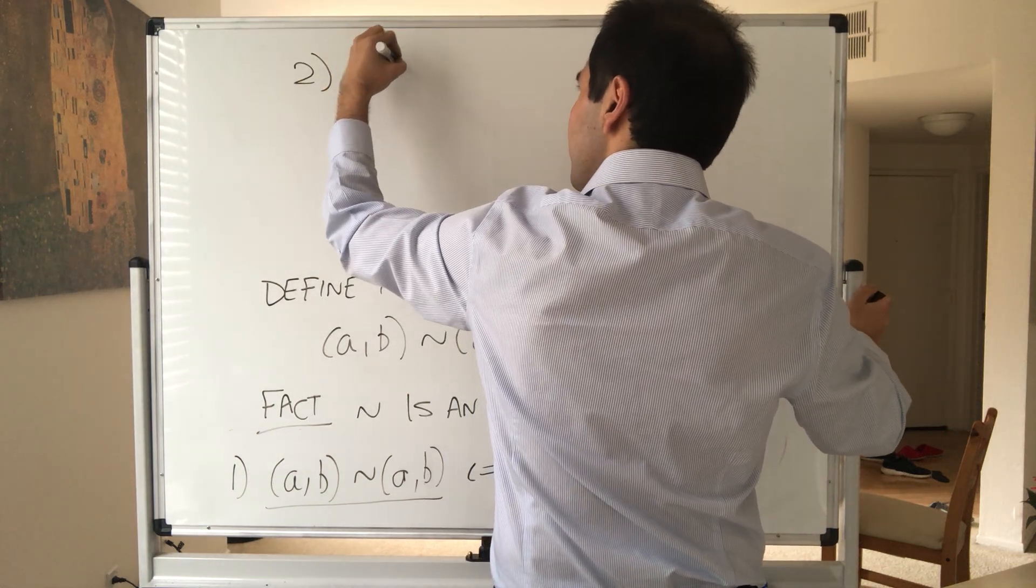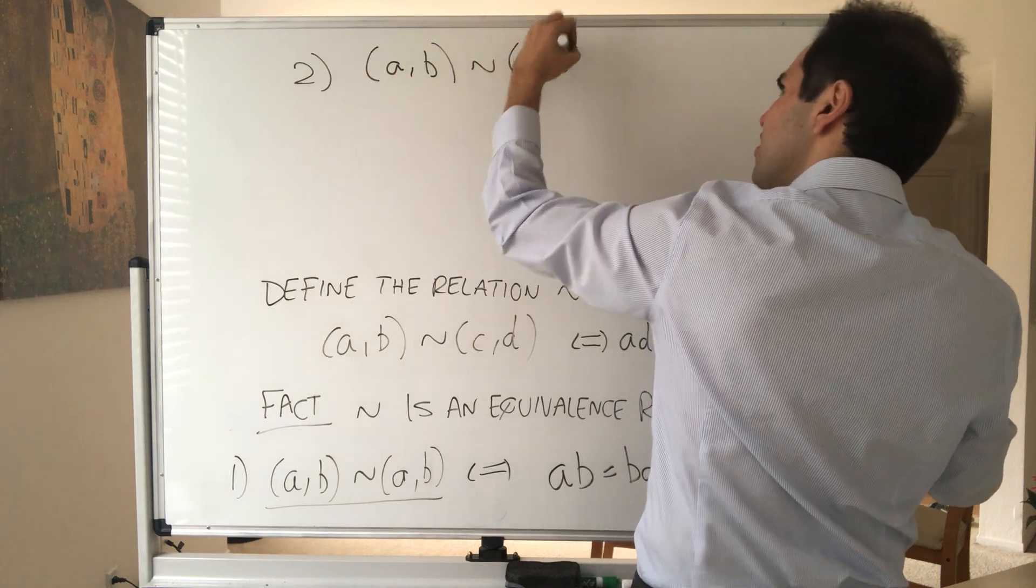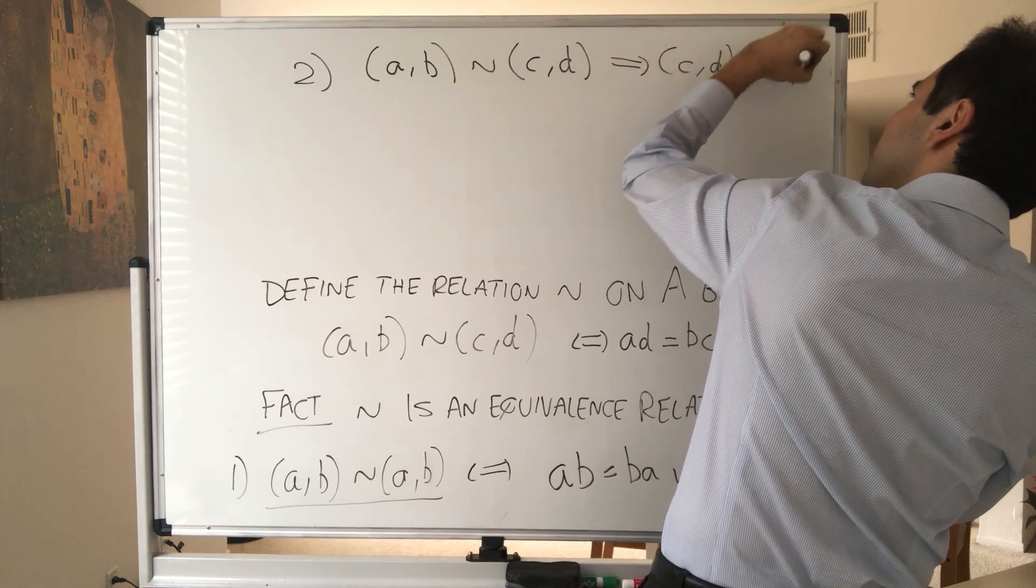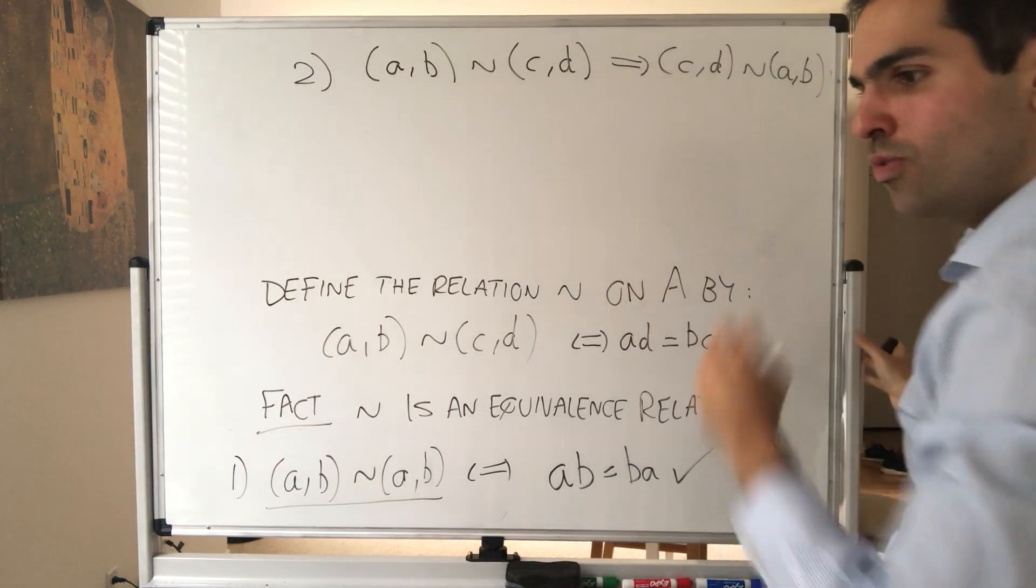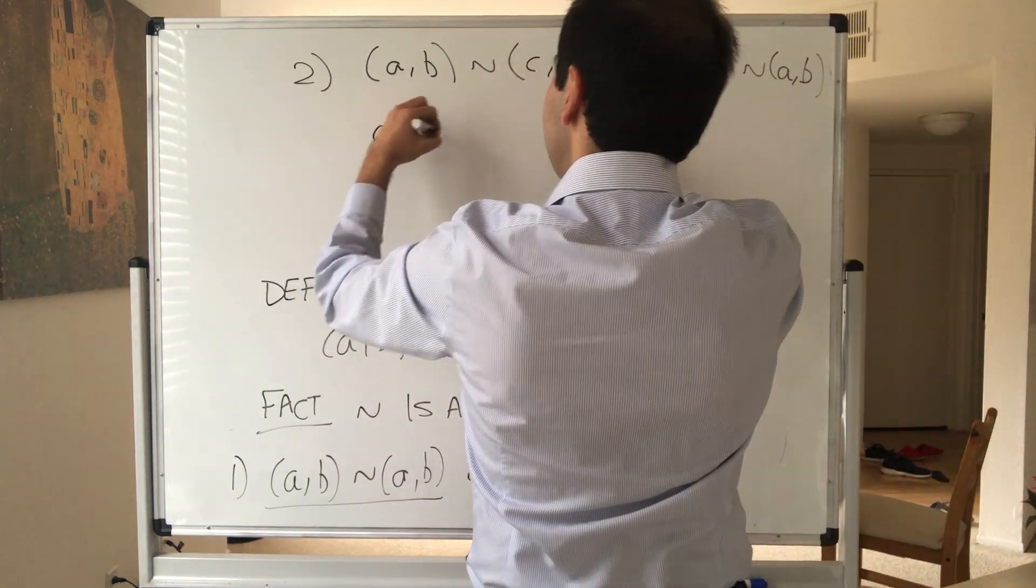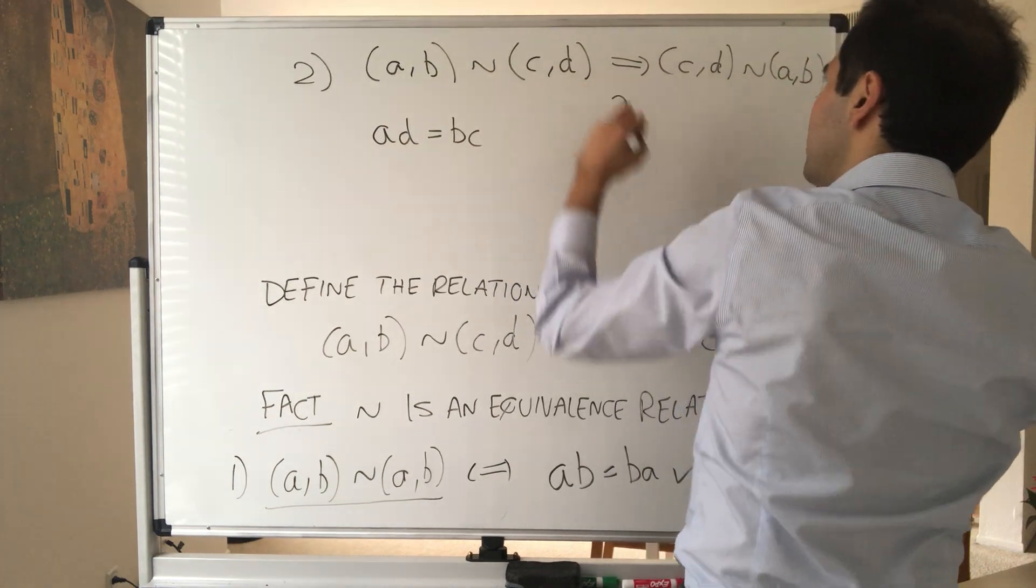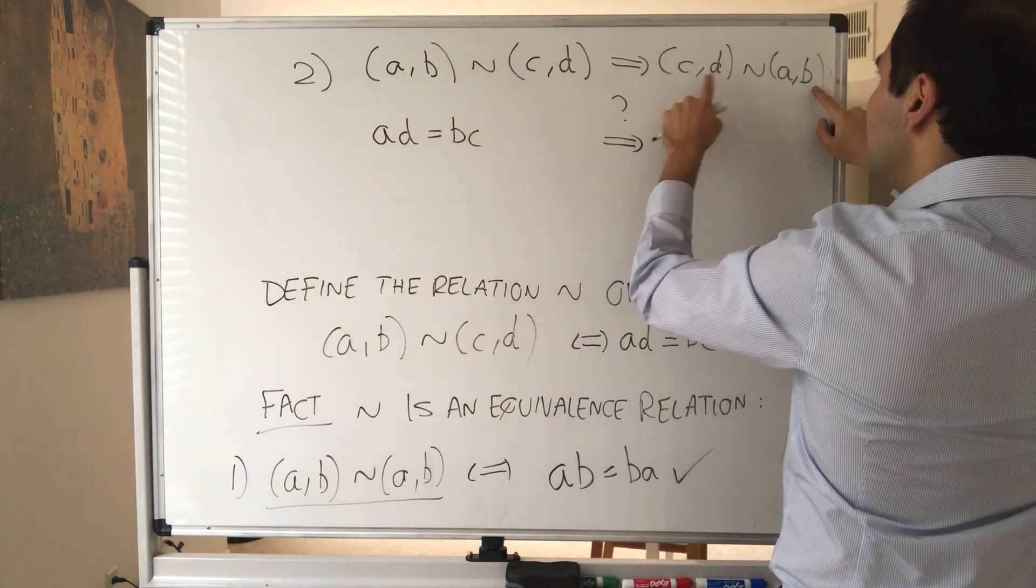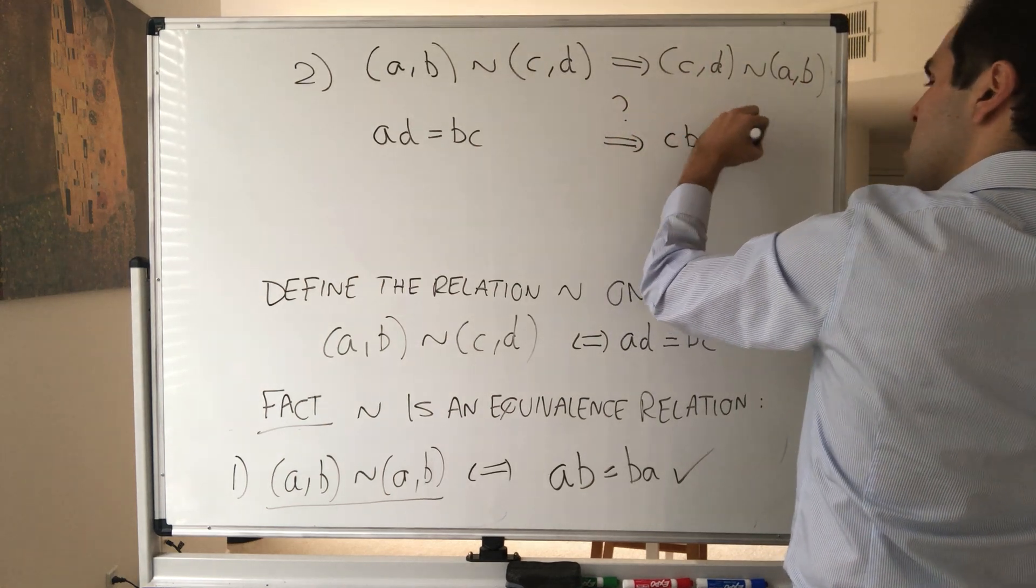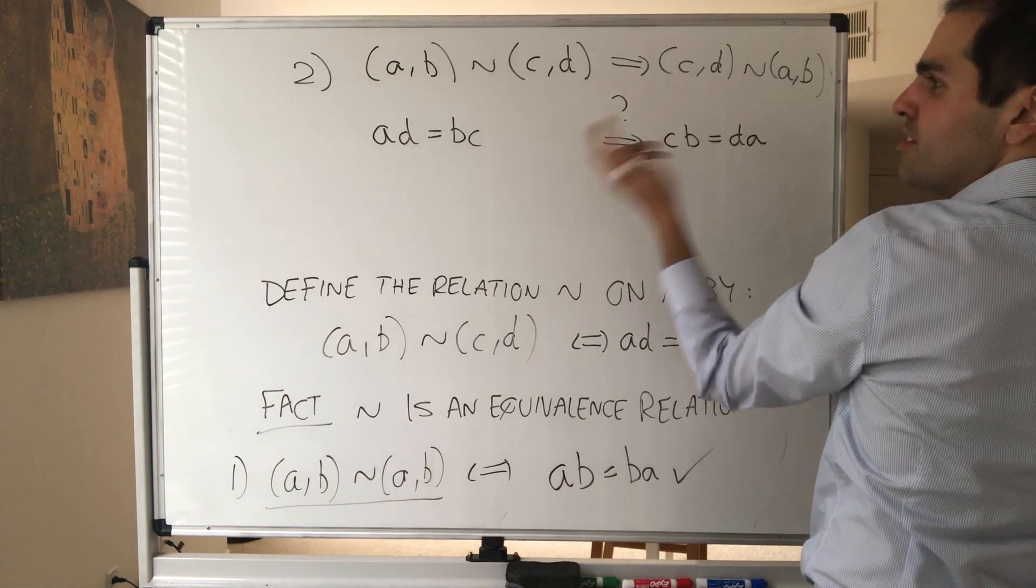Then the next thing we have to show is that if (a, b) is equivalent to (c, d), then (c, d) is equivalent to (a, b). So if x is equal to y, then y is equal to x. But what does that mean? This means AD equals BC, and the question is, does this imply CB equals DA? Well, pretty much, because you see this is the same thing as AD and this is the same thing as BC. So indeed that is correct.